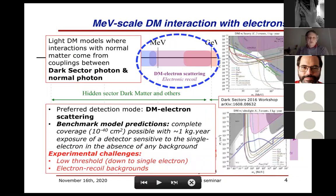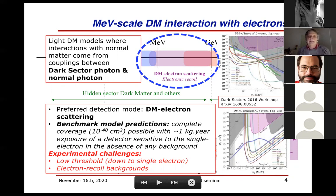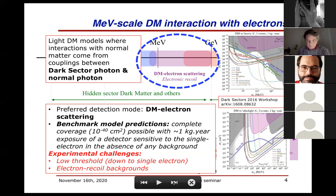It's not only nuclear recoil that we want to look for. In dark sector models, the coupling of the dark matter particle with normal matter is done via a dark sector photon that couples to the normal photon. You can have cosmologically viable models — the so-called benchmark models — where the dark matter particle has a mass in the MeV to GeV range.